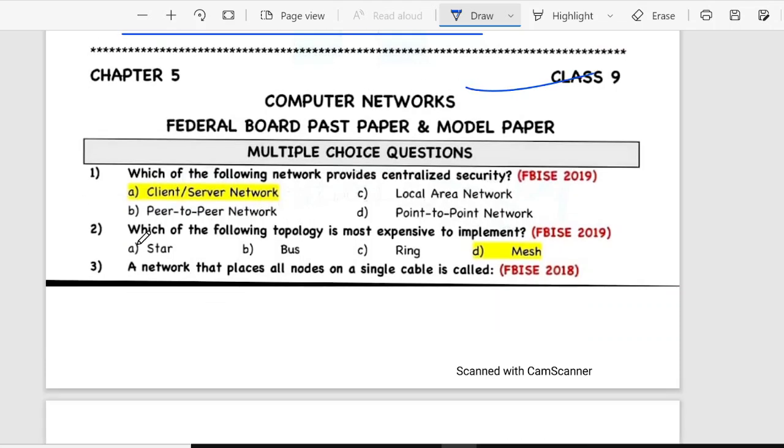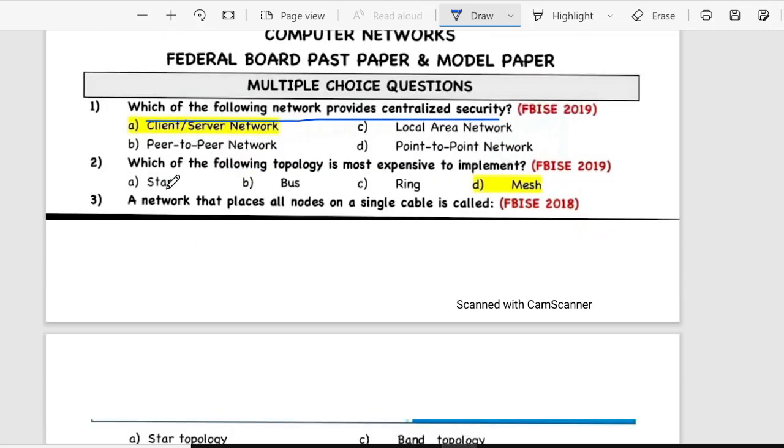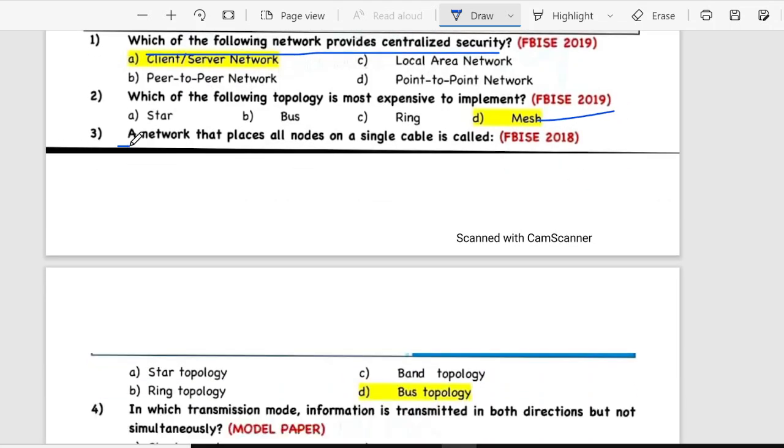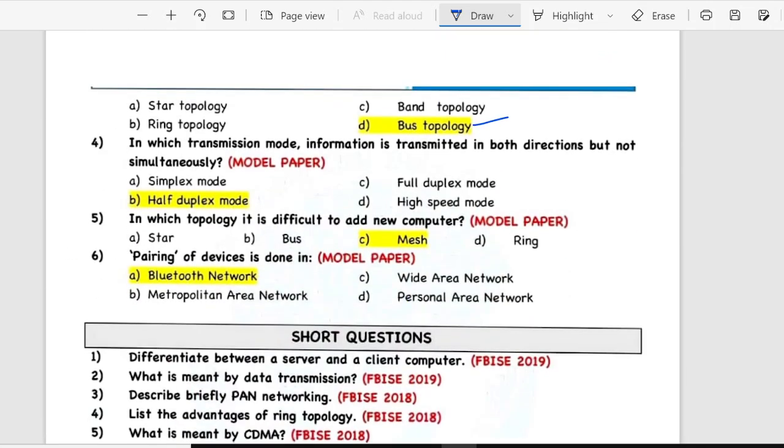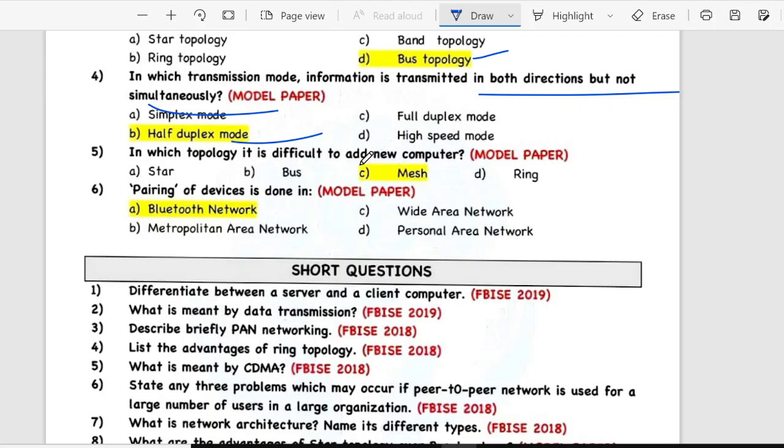Fifth here, computer networks. The following network provides centralized security: client server network. Second is the following topology is most expensive to implement: mesh. Third is a network that places all nodes on a single cable is called bus topology. Fourth is transmission mode information is transmitted in both directions but not simultaneously: this is half duplex mode. Fifth is in which topology it is difficult to add new computer? Mesh. Sixth is pairing of devices is done in Bluetooth network.